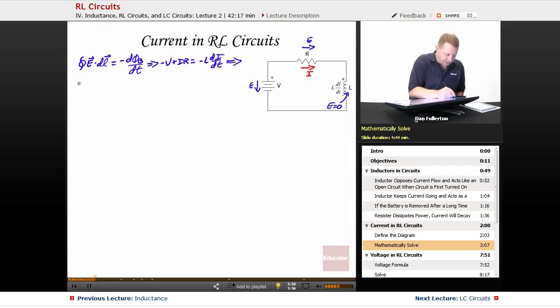So let's start to rearrange this a little bit. We have I minus V over R must equal minus L over R dI/dt as we work to separate our variables in our differential equation.